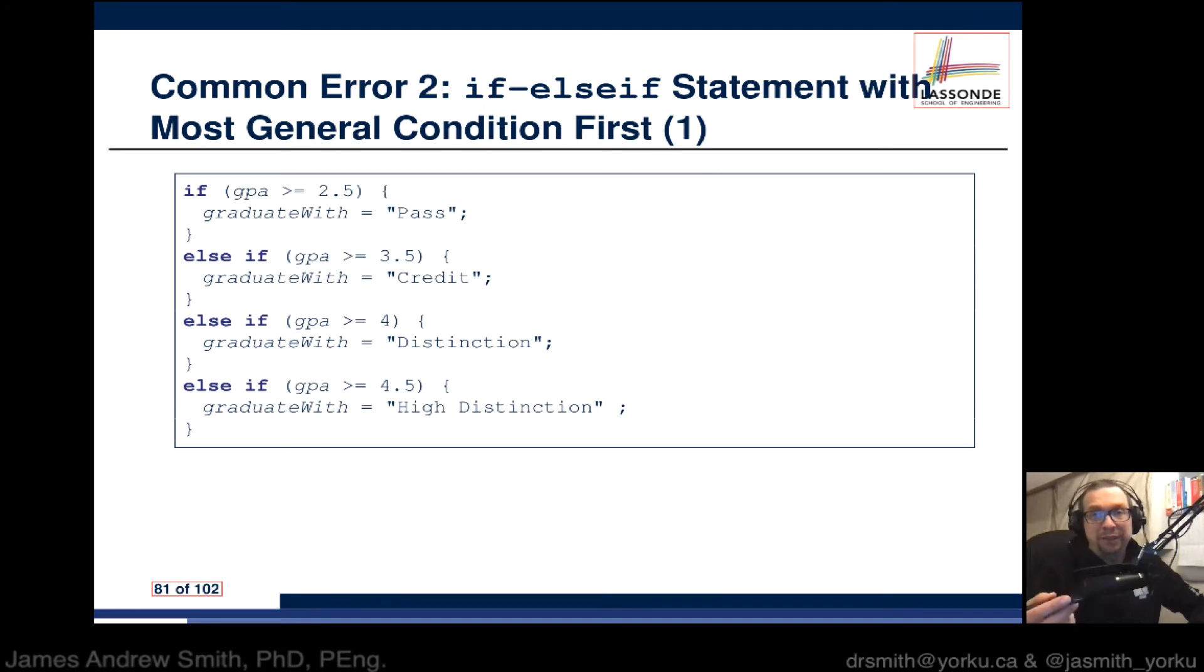What we've got here is an if-else-if statement where the most general condition has been placed first. This is a marking question where we're looking at the grade point average of a student, and we have a four-part if-else statement structure.